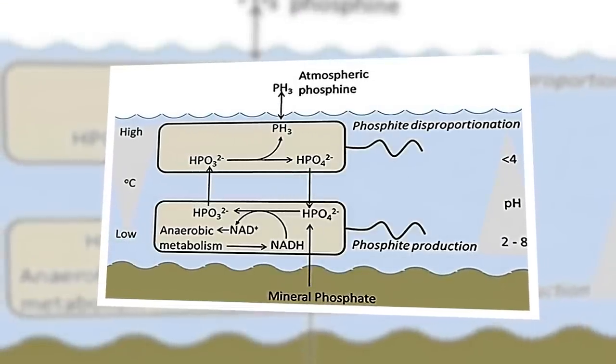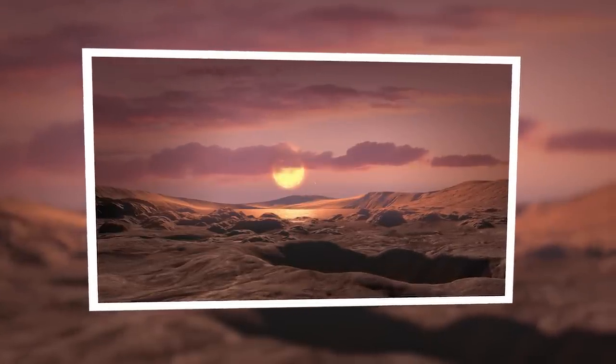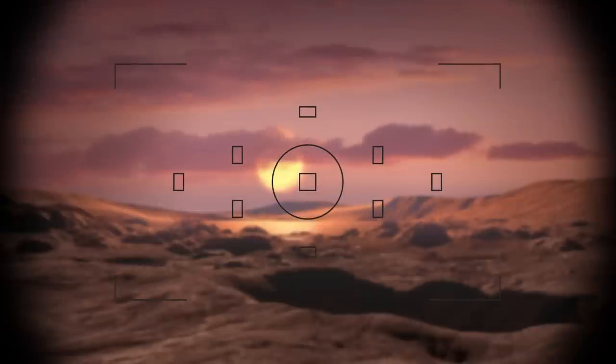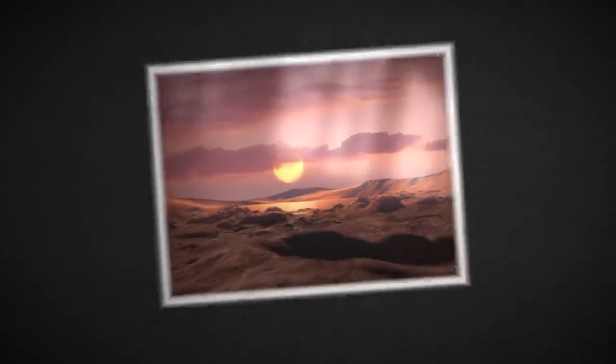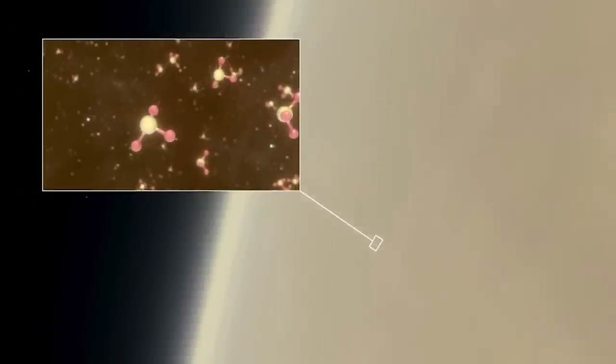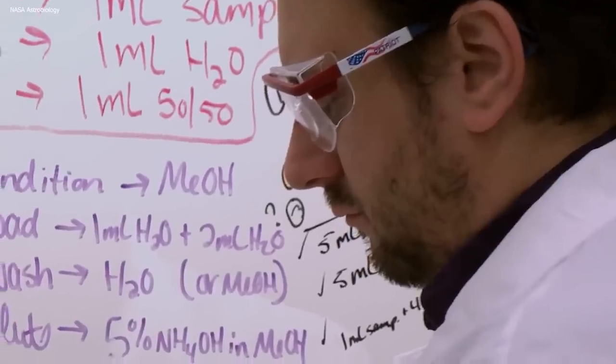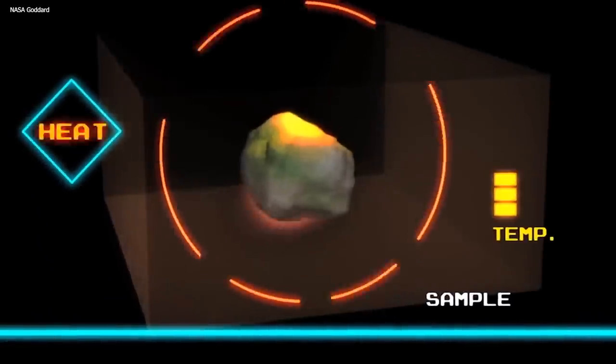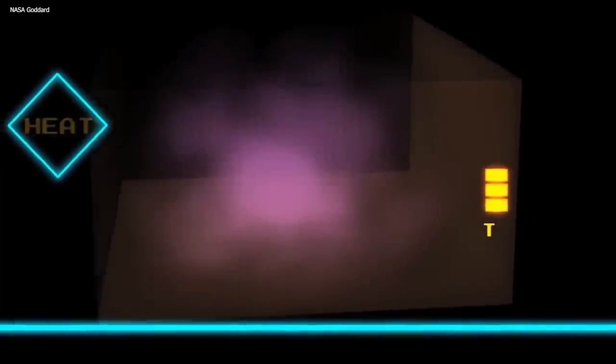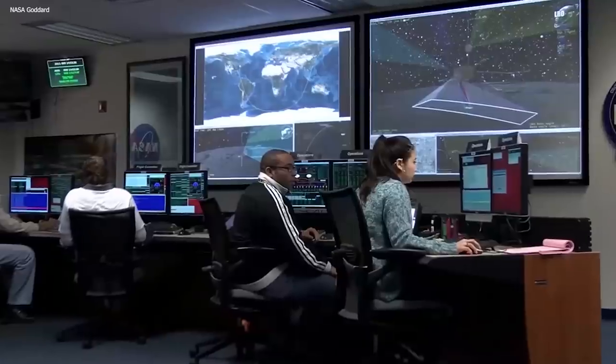This discovery was exciting because phosphine can be produced by living organisms and, as such, raise the possibility of the existence of life on Venus. However, it is important to note that this discovery is not conclusive evidence of life on the planet. Not yet, anyway. To confirm the presence of phosphine on Venus, additional data needs to be collected. This can be done by sending atmospheric probes that can directly detect the gas or by analyzing archived data from past missions to Venus. By collecting more data and analyzing it thoroughly, scientists can verify the presence of phosphine and determine whether it is being produced by living organisms or through non-biological processes.